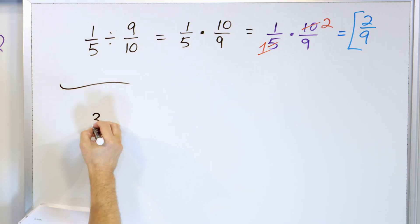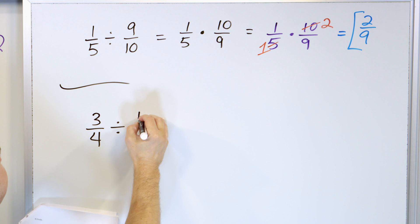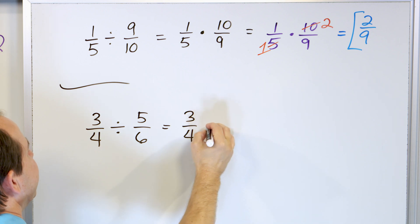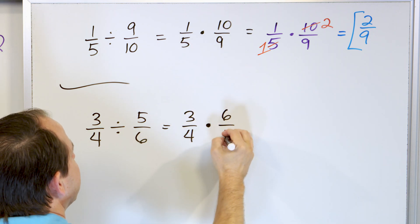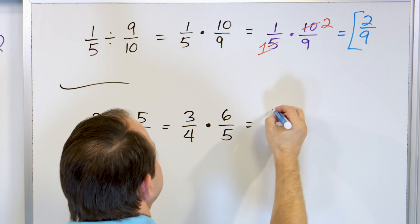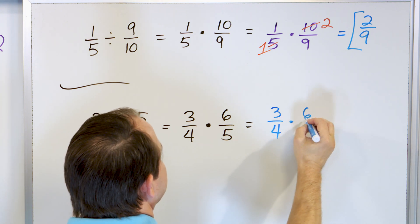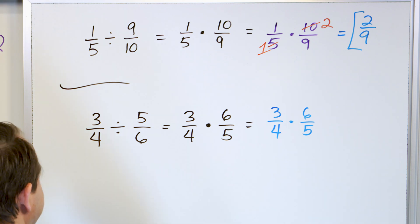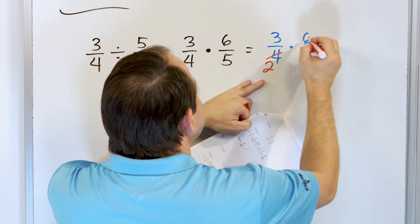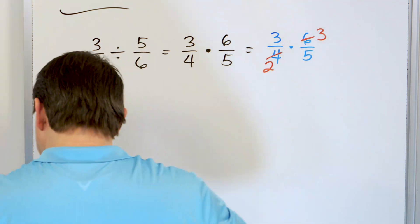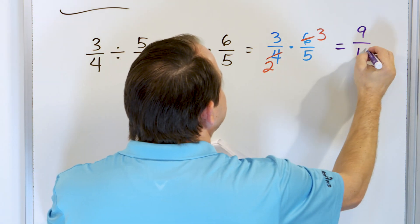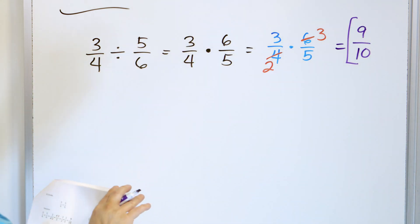Next: three-fourths divided by five-sixths. Change to multiplication; the three-fourths stays untouched. We flip the second fraction over to six-fifths. Rewriting: three-fourths times six-fifths. How can we pre-simplify? Three and five — can't simplify. Six and four — divide by two: four divided by two is two, six divided by two is three. The answer: three times three is nine, and two times five is ten — nine-tenths. I cannot simplify that any further.